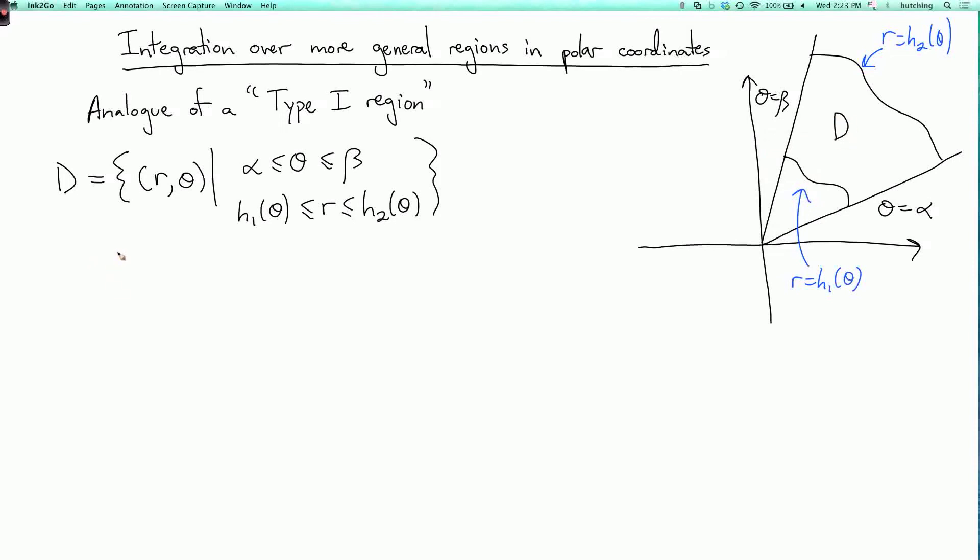So by analogy with what we did in Cartesian coordinates, the double integral over D of a function f with respect to area is the integral as theta goes from alpha to beta, and then r goes from h1 of theta to h2 of theta, and then f of r theta, and then the usual magnification factor r times dr d theta.